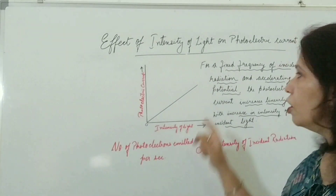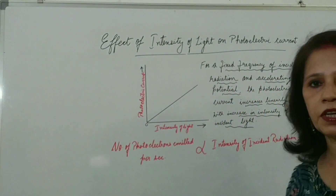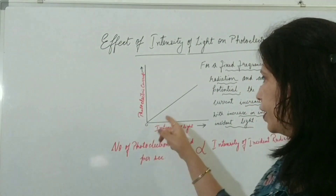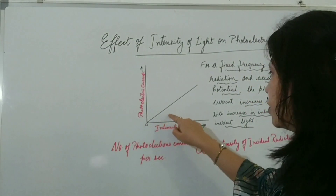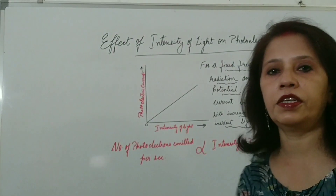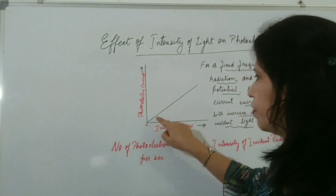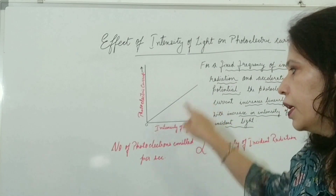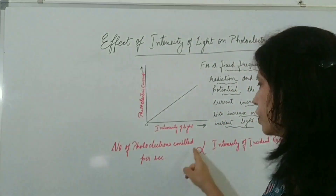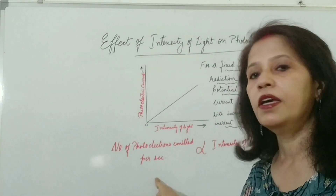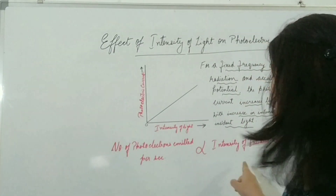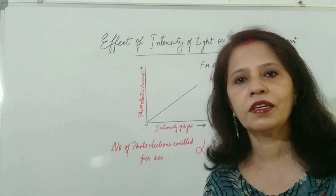For a fixed frequency of incident radiation and accelerating potential, the photoelectric current increases linearly with the increase in intensity of incident radiation, as we can see from this graph. That means the number of photoelectrons emitted per second is directly proportional to the intensity of incident radiation.